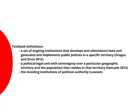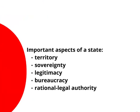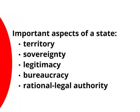There are lots of things going on here. It's an institution, a political legal unit, and there's a territorial aspect. Some of the really crucial aspects of the modern state are that it has territory, sovereignty, legitimacy, a bureaucracy, and a certain kind of authority. We will tackle all of these one by one in a moment.